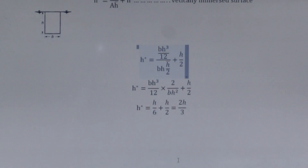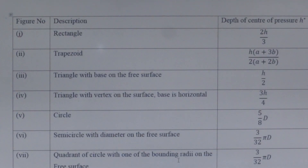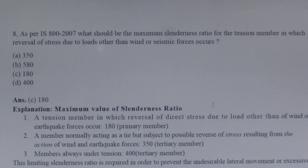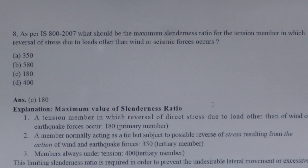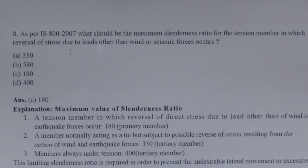Since the formula is very widely used, we must remember the standard cases to find the depth of center of pressure. Next question: As per IS 800:2007, what should be the maximum slenderness ratio for a tension member in which reversal of stress due to loads other than wind or seismic forces occurs? The IS 800 code limits the maximum slenderness ratio to prevent undesirable lateral movement or excessive vibration. In this case, the maximum slenderness ratio is 180.